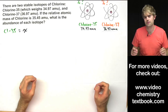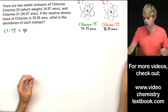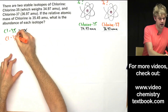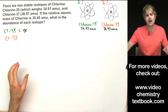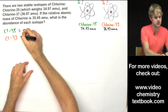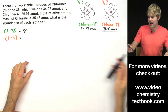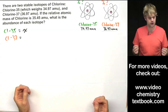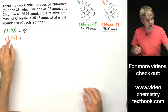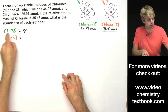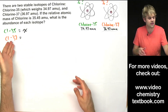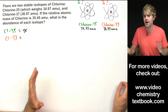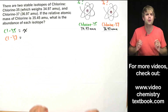What about chlorine-37? We could say that it's y, but that would be a pain because then we'd have two variables to solve for — x and y — and that would make things much more difficult. What we really want to be able to do is express chlorine-37's abundance using x in some way. Let me show you how we're going to do it.